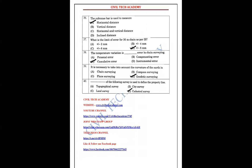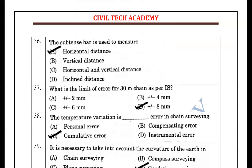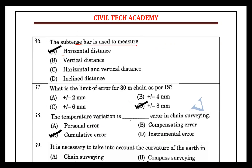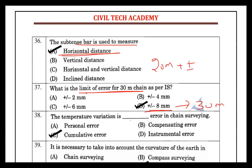The subtense bar is used to measure horizontal distance. The limit of error for a 30 m chain is plus or minus 8 mm, and for a 20 m chain it is plus or minus 5 mm.